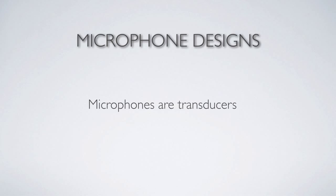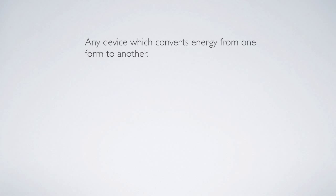The primary definition is that microphones are transducers. A transducer is any device that converts energy from one form to another. There are many examples of this in our life — light bulbs convert electrical energy into photonic energy or light, and even our bodies convert chemical energy from food into energy we can use. We're going to focus on the types of transducers you would find in recording studios.